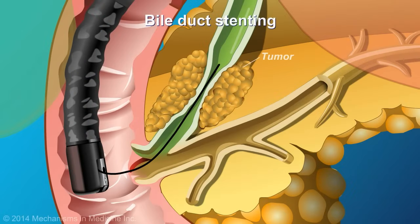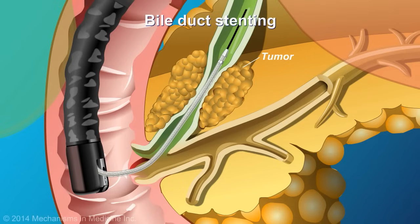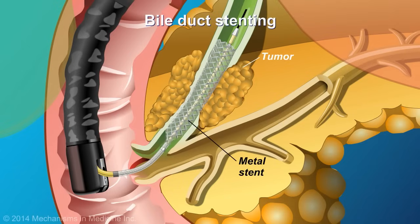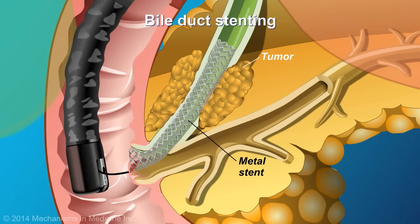In the bile duct, if a tumor causes blockage and requires drainage, a metal stent, if malignant disease, or plastic stent, if it is unknown if the obstruction is benign or malignant, can be used to bypass the blockage and re-establish the flow into the duodenum.